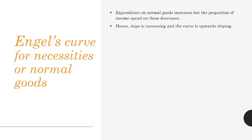The first one is Engel's curve for necessities or normal goods. These goods follow Engel's law — expenditure on normal goods increases but the proportion of income spent on them decreases as we discussed earlier. Hence the slope is increasing and the curve is upward sloping. Now, suppose your income doubles — will you double your grocery budget? No, you won't. Your consumption will obviously increase but you won't double the amount of grocery items just because your income doubled.